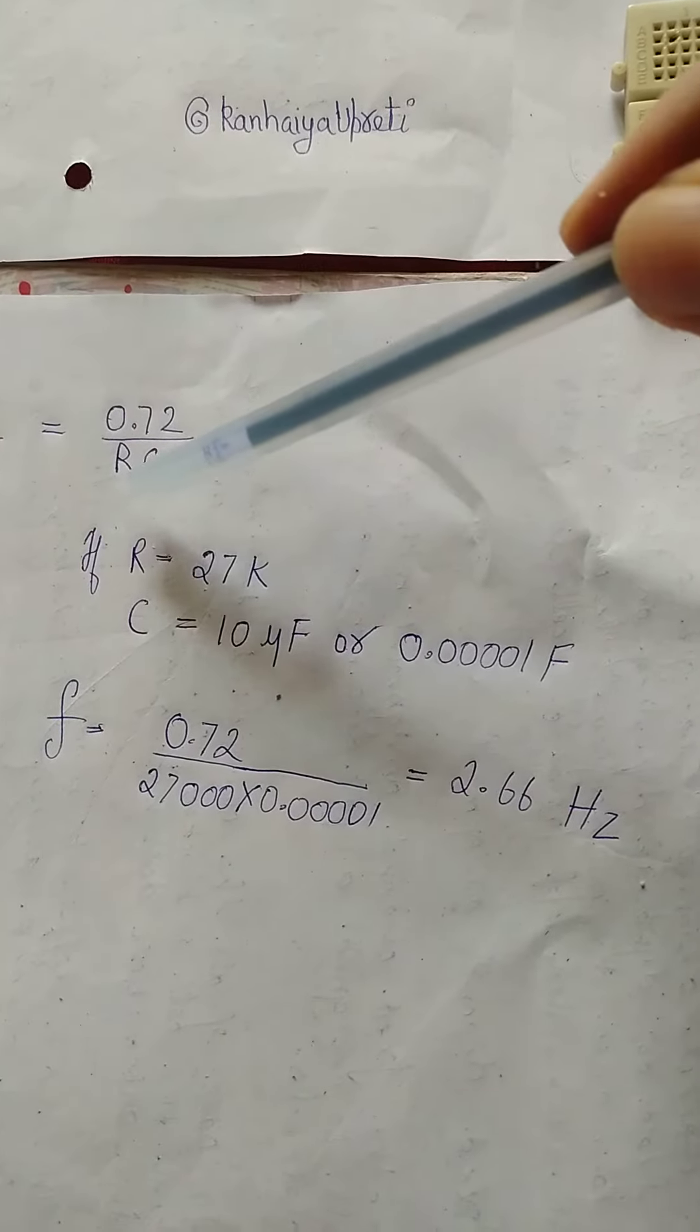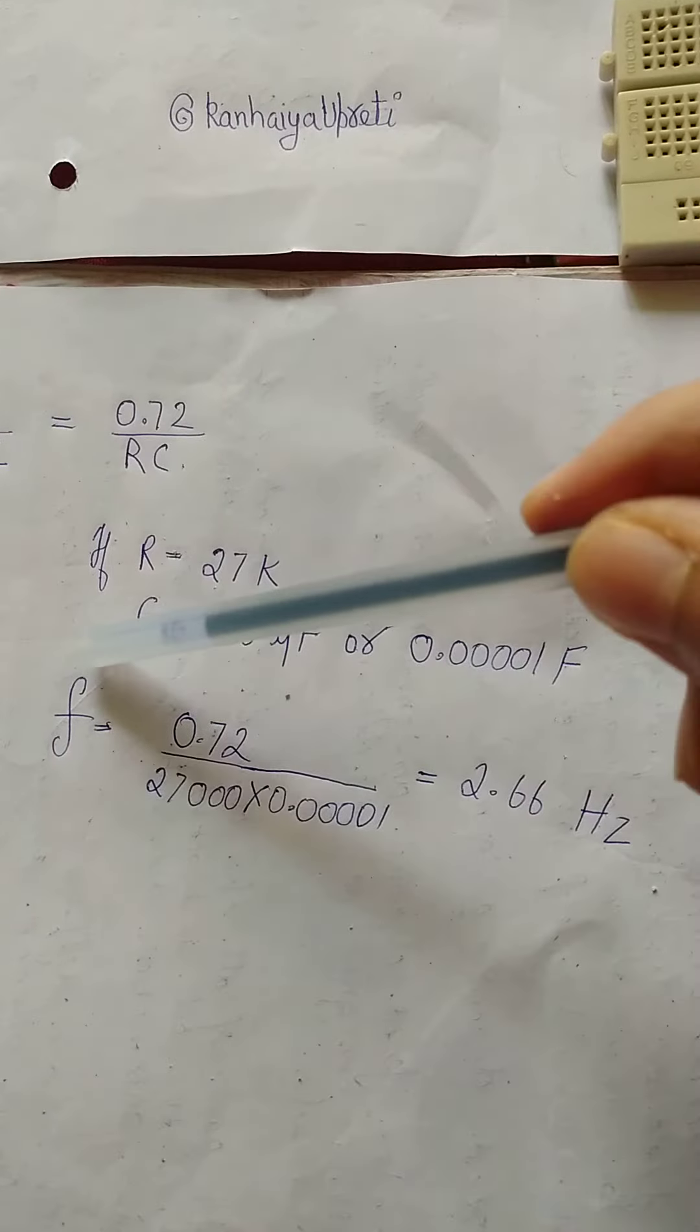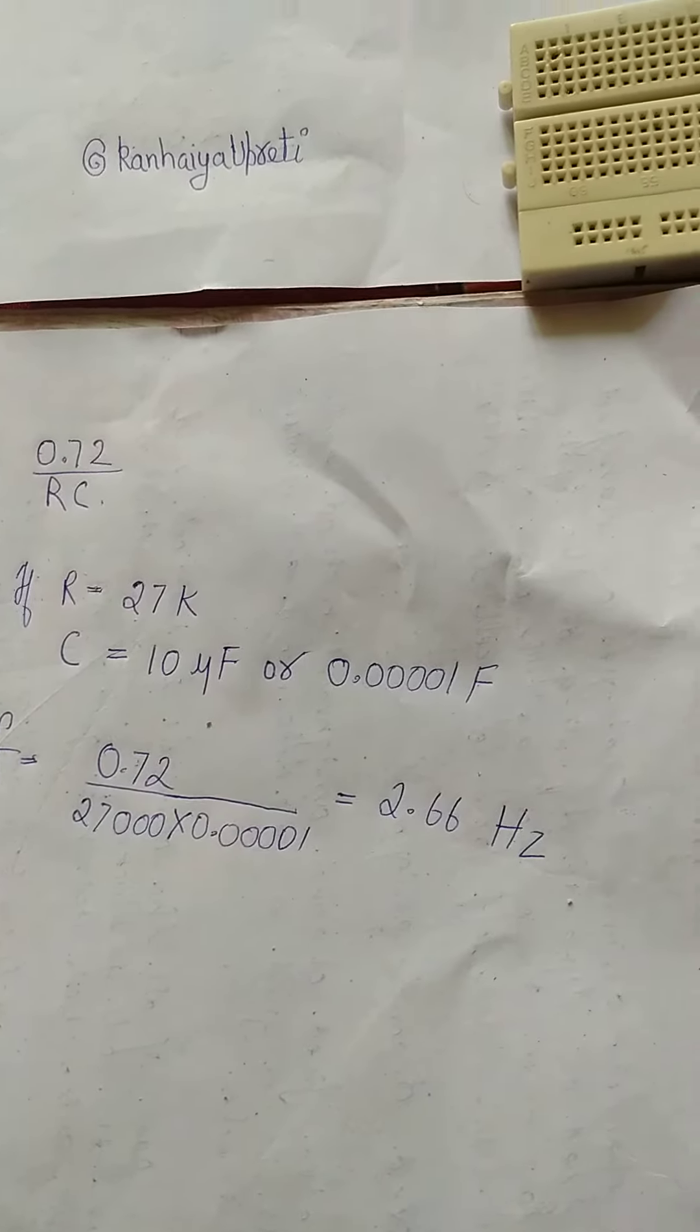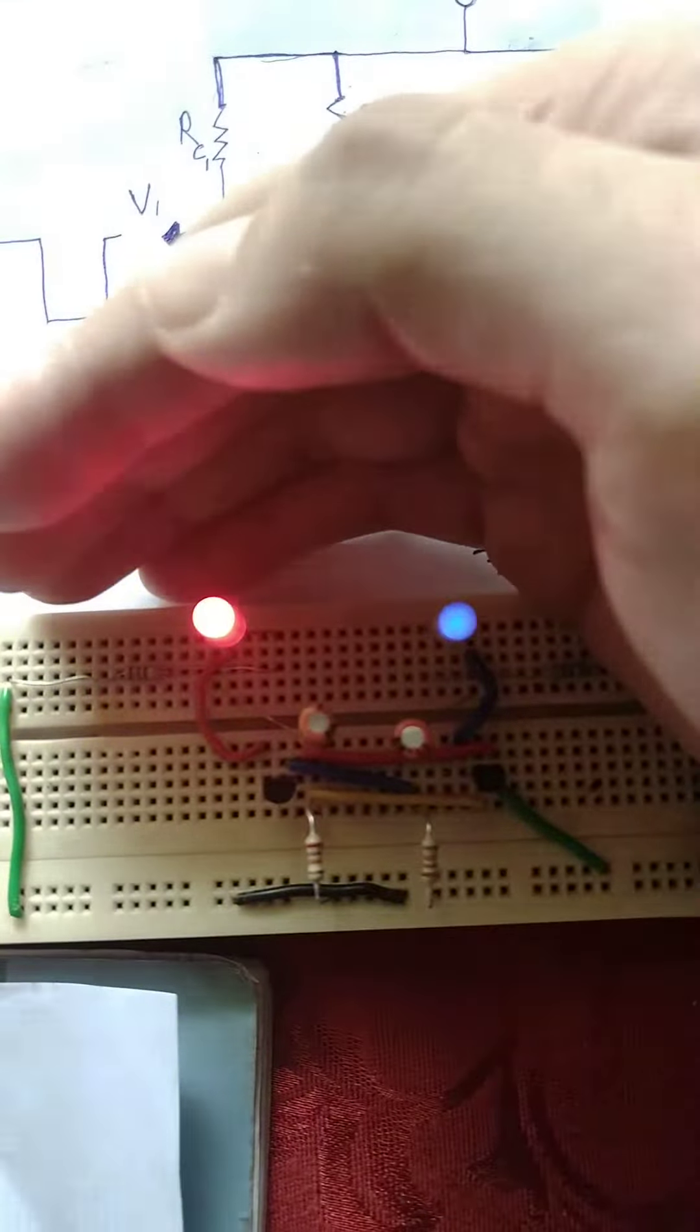So in my case where I've used R equals 27k and C equals 10 microfarad, the frequency is 2.66 Hertz, which means these LEDs are blinking two times per second.